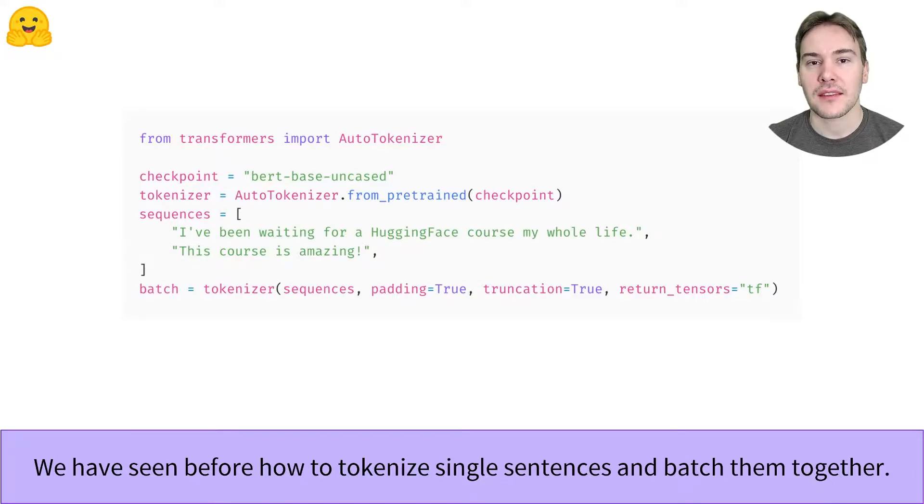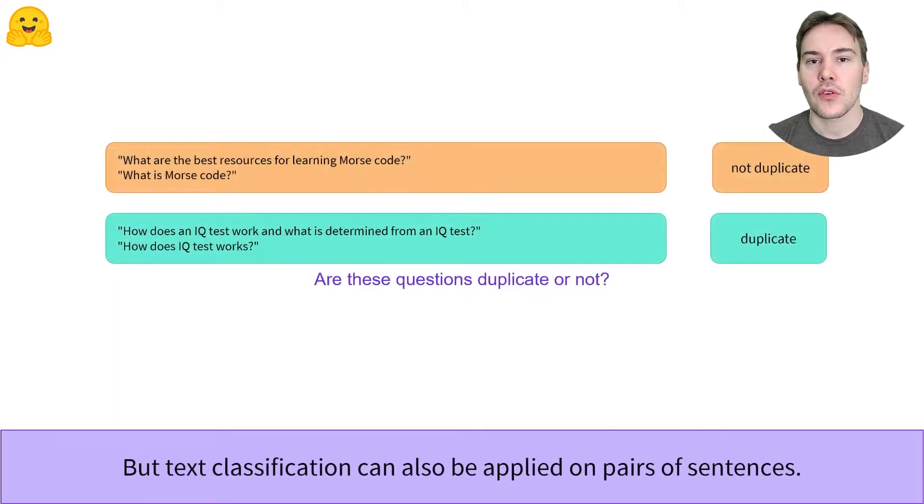Here we will focus on tasks that classify pairs of sentences. For instance, we may want to classify whether two texts are paraphrases or not. Here is an example taken from the Quora question pairs dataset, which focuses on identifying duplicate questions.